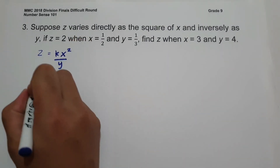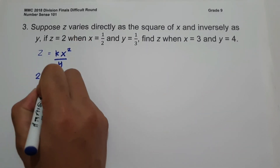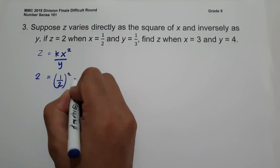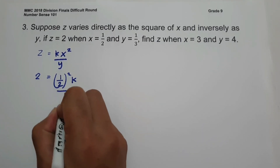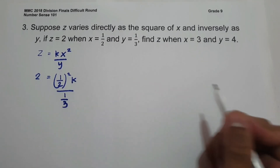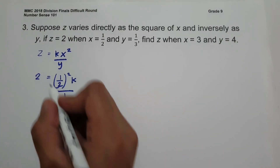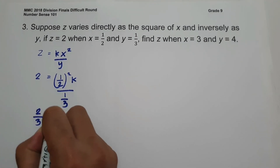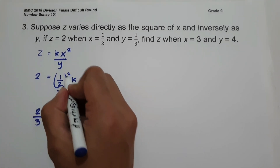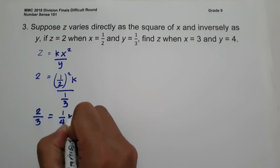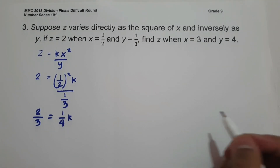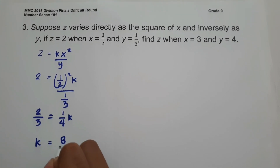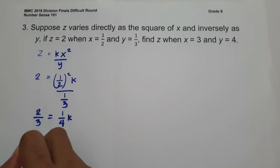Using the first set of given values — Z = 2, X = 1/2, Y = 1/3 — we get: 2 × (1/3) = (1/2)² × K, so 2/3 = (1/4) × K. Multiplying both sides by 4: K = 8/3.